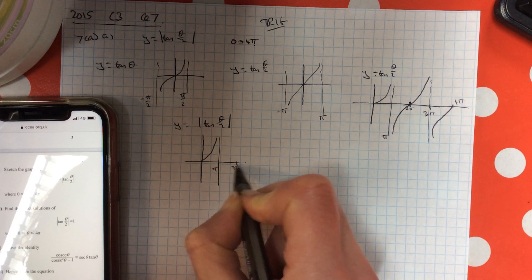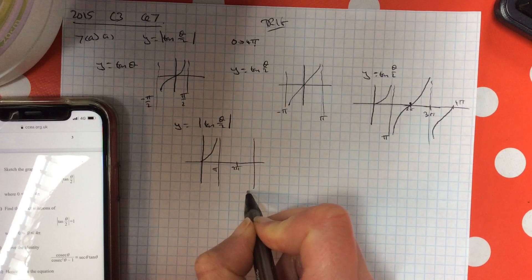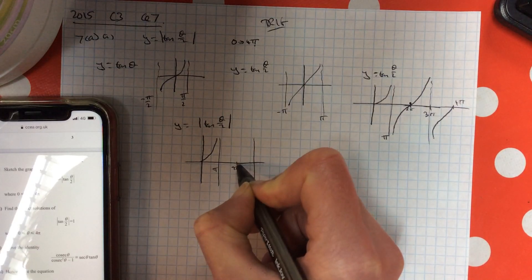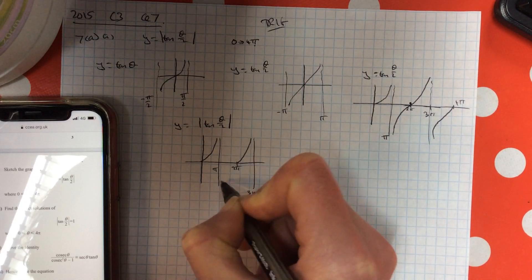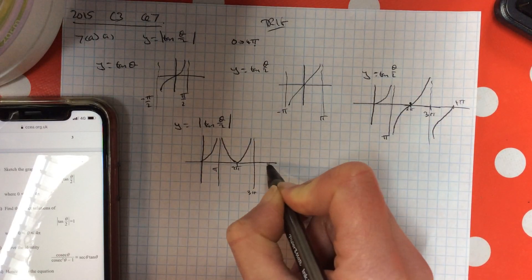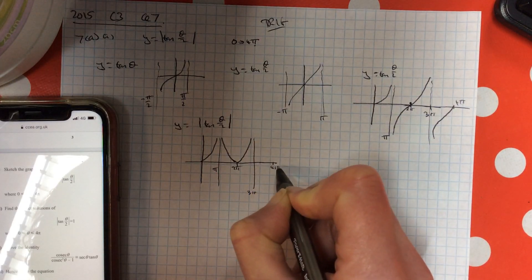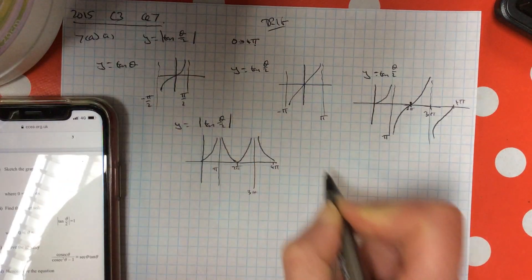Just drawing in the asymptotes, the first one is fine. The next one, that's 2 pi, and the asymptote is at 3 pi. So this bit is fine, and the bottom bit has been reflected up. And over 2 to 4 pi, the bottom bit has been reflected up.